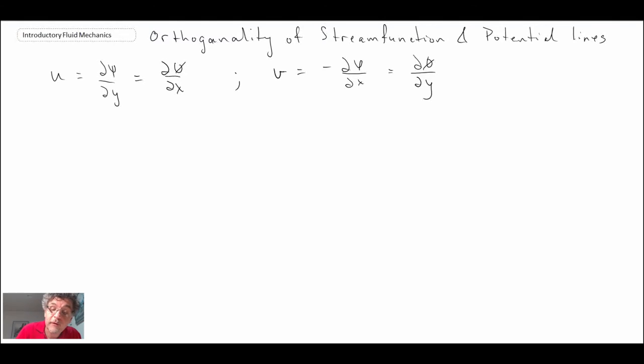Now, we also looked at the total derivative for the potential and the stream function. And we said that on lines of constant potential, that was zero.